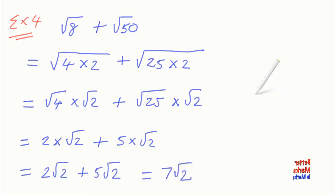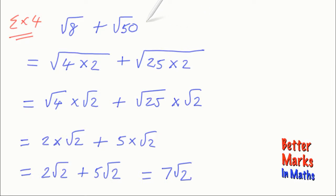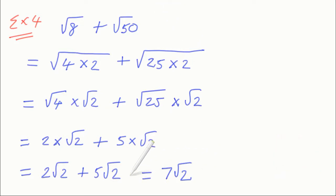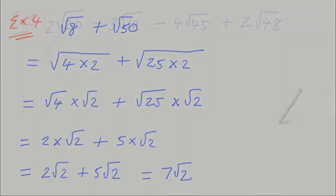So that's what you've got to do with surds like this: simplify them first using your list of perfect squares, and then if you end up with like surds you can simplify them further, as shown in this example.